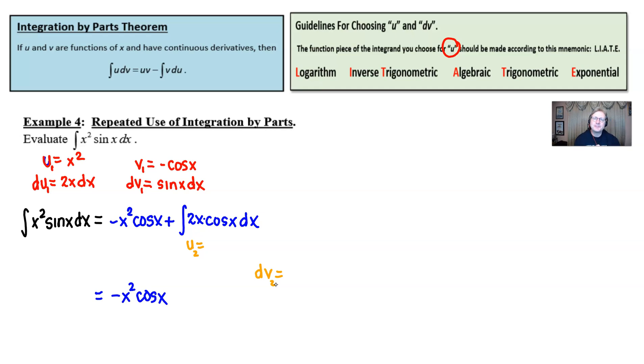All right, what are you going to use for your u2 and your dv2? Well, the u2, we still haven't found what we're looking for here, so the u2 is going to be the same part of the integrand. It's going to be the 2x, right? We still want to use the algebraic part, and the dv2 will be the cosine of x dx, and so when we take the derivative of u2, we get du2, and we get obviously 2, right? And we'll swing over the dx.